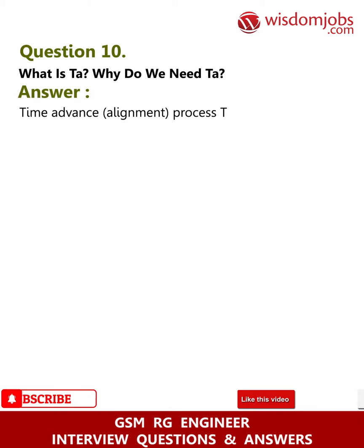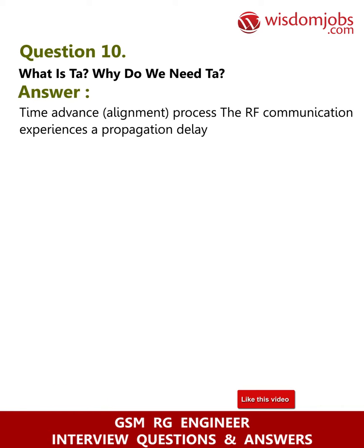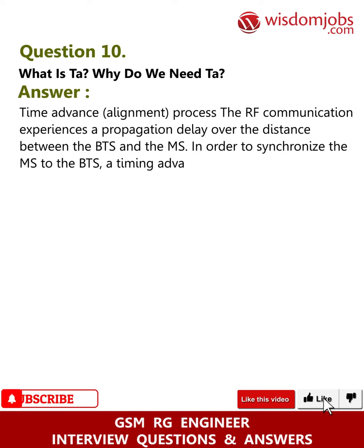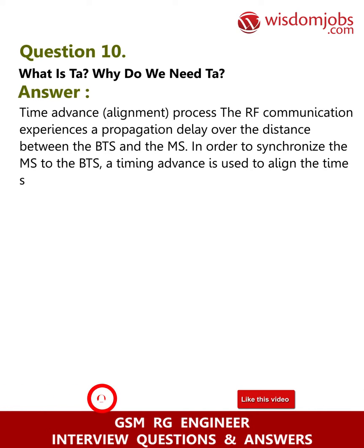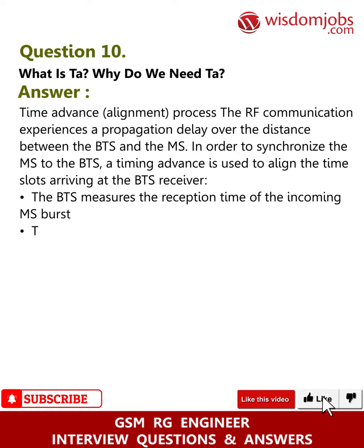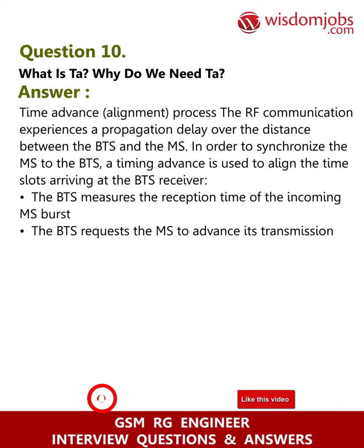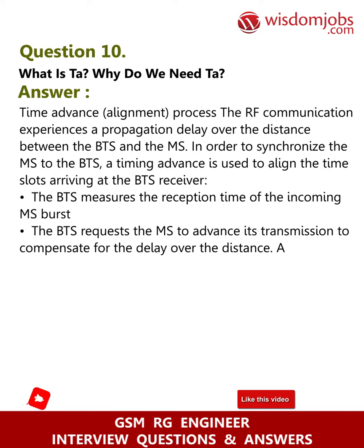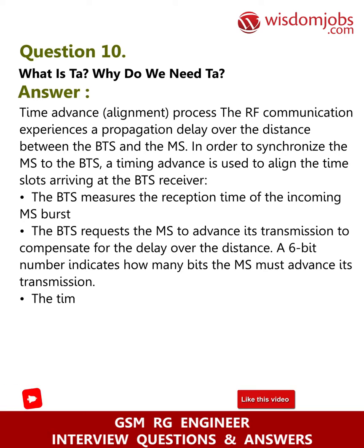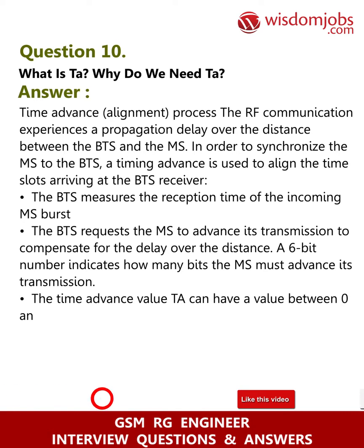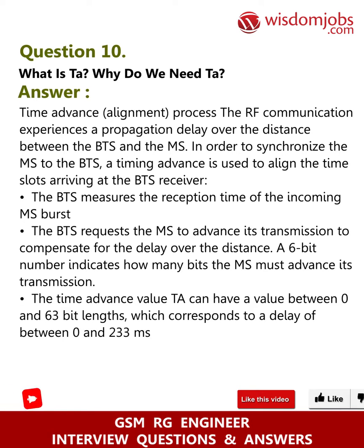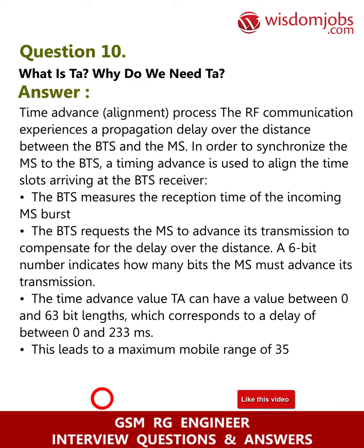Question 10: What is Timing Advance (TA)? Why do we need it? RF communication experiences a propagation delay over the distance between the BTS and the MS. To synchronize the MS to the BTS, a timing advance is used to align the time slots arriving at the BTS receiver. The BTS measures the reception time of the incoming MS burst and requests the MS to advance its transmission to compensate for the delay. A 6-bit number indicates how many bits the MS must advance; the TA value can range from 0 to 63 bit lengths, corresponding to a delay of 0 to 233 µs and a maximum mobile range of 35 kilometers.